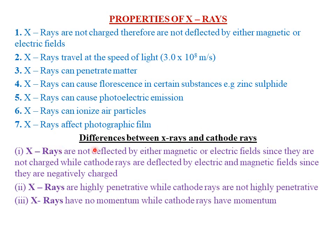Next we look at the differences between X-rays and cathode rays. The first difference is that X-rays are not deflected by either magnetic or electric fields, because they are not charged, whereas cathode rays are deflected by both electric and magnetic fields because they are negatively charged. A ray can only be deflected by electric and magnetic fields if it possesses charges; otherwise it won't be deflected.